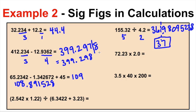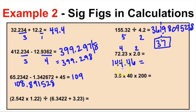Taking 72.23 times 2.0 gives 144.46. If we leave the answer like this, it's incorrect because this number has four sig figs and this has two. The answer must be rounded to two sig figs. We can either put this in scientific notation or round to 140. Writing 140 without a decimal gives two sig figs, matching the two sig figs in the problem.